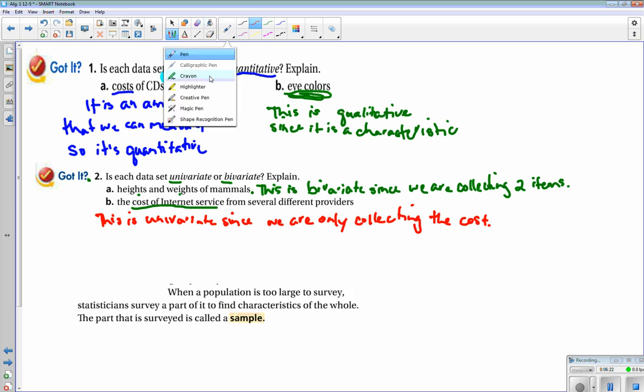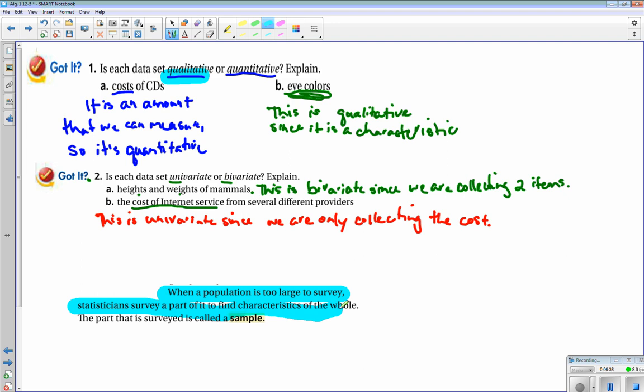All right, one thing to note, I pulled it from your textbook, is that when a population is too large to survey, like everybody in a country, statisticians survey a part of it to find characteristics of the whole. So if you get enough people in that group, it'll represent enough of the whole group. The part that is surveyed is called a sample.